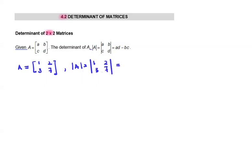How to evaluate its determinant? Use the element of 1 times 7 minus 3 times 2. This equals to 7 minus 6 which is equal to 1.